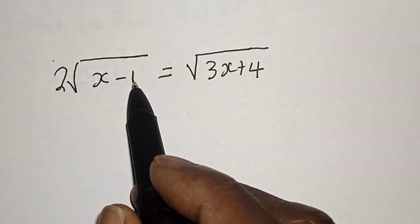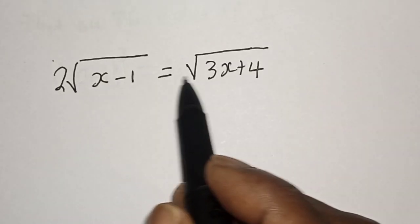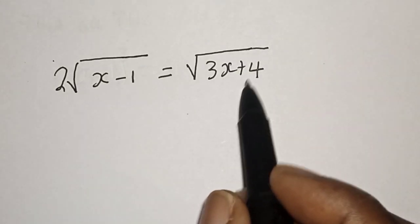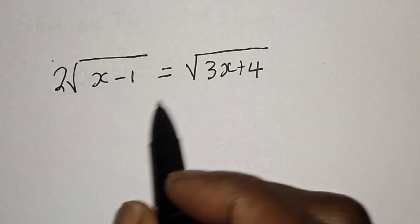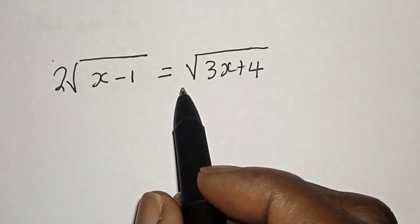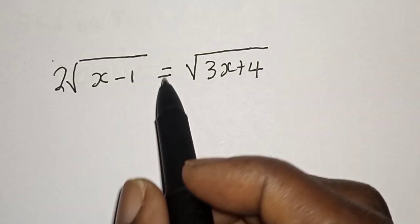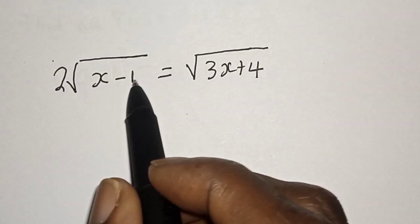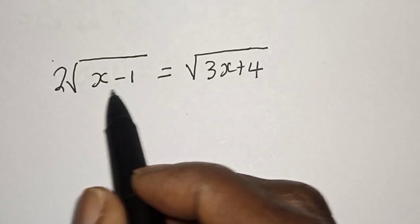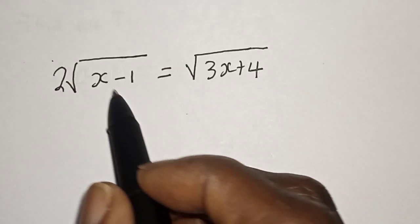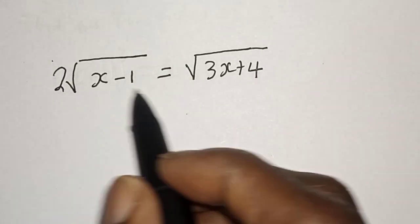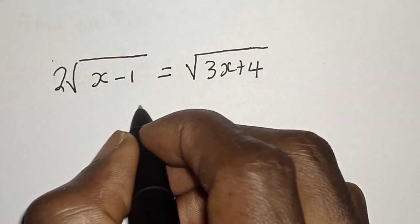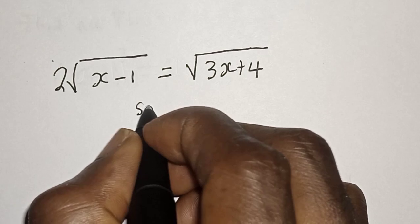2 square root of s minus 1 is equal to square root of 3s plus 4. Hi everyone, welcome to my class. In this class we want to find the value of s from this given equation. Before we proceed, please don't forget to like, share, comment and subscribe.